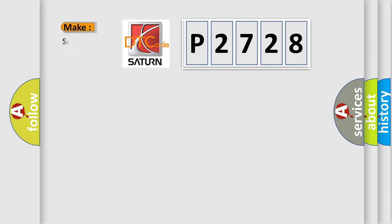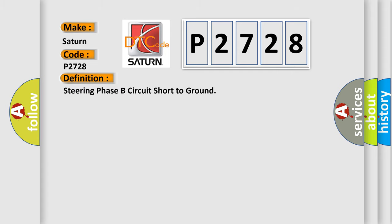So, what does the diagnostic trouble code P2728 interpret specifically? For Saturn car manufacturers, the basic definition is: Steering phase B circuit short to ground. And now this is a short description of this DTC code.